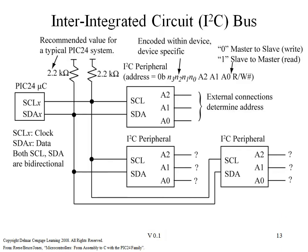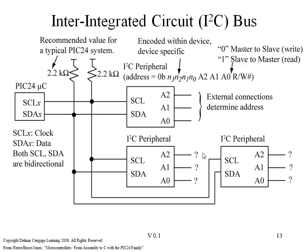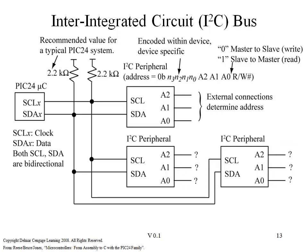In order for each chip to possess its own address, we need to be able to physically tell a specific chip what its address is. You can see that capability provided here on this chip — three external connections actually determine the address of that chip. For another chip, again, three pins allow determination of a specific address.